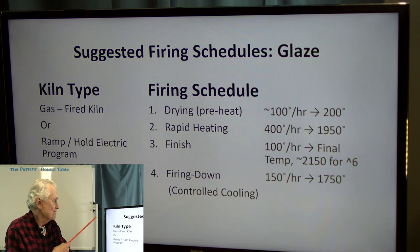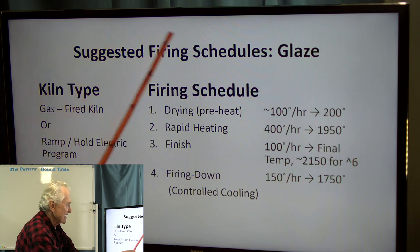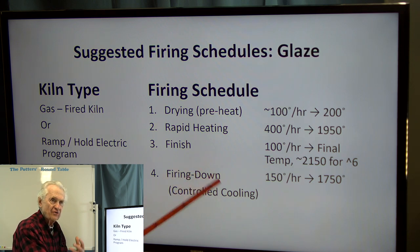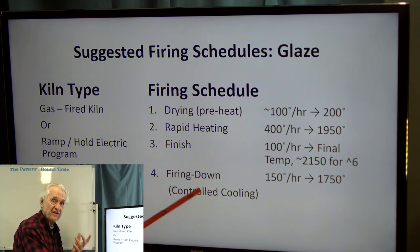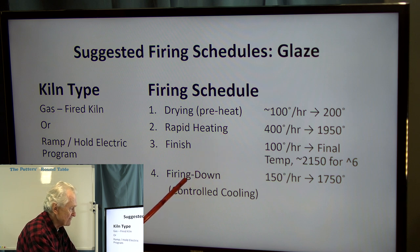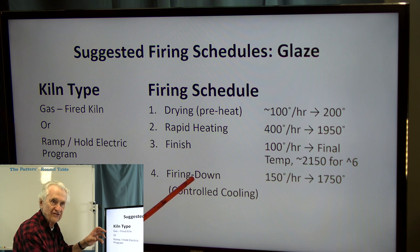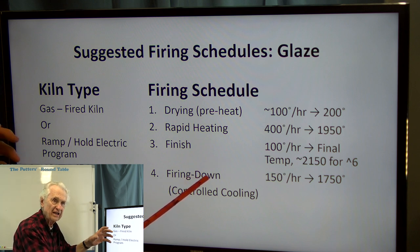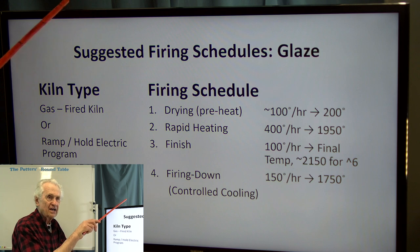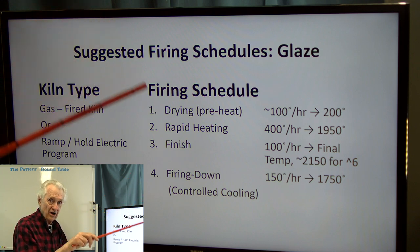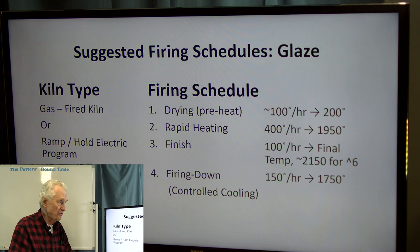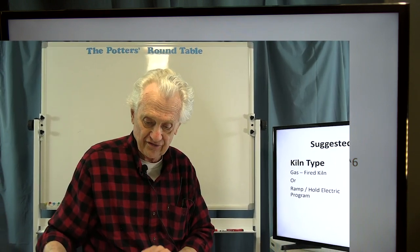For a gas-fired kiln with ramp-and-hold, one useful addition compared to a manual kiln is controlled cooling. Instead of turning the gas off at the end, you turn it down slightly and allow the temperature to drop gradually. In ramp-and-hold programs, you can actually program in lower temperature steps after the final temperature to slow the cooling — this is where you can get good crystallization of certain glazes.